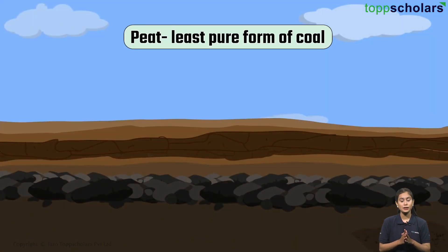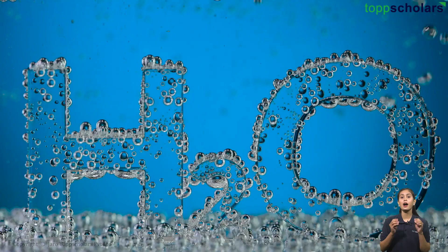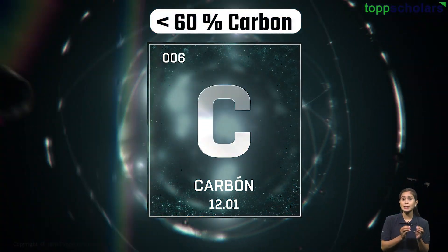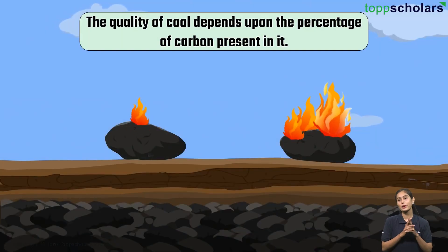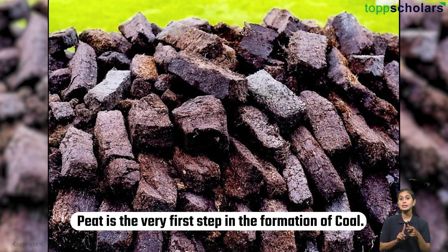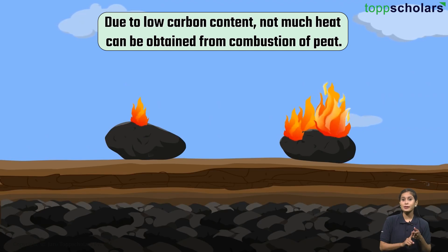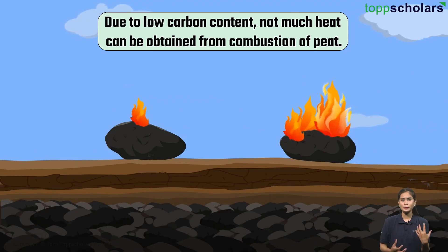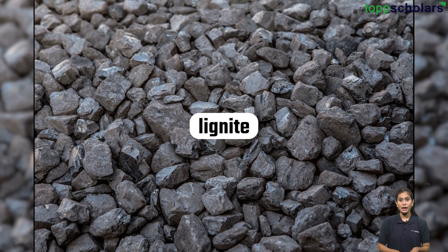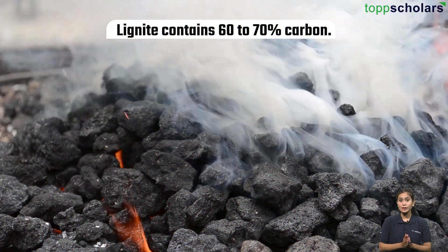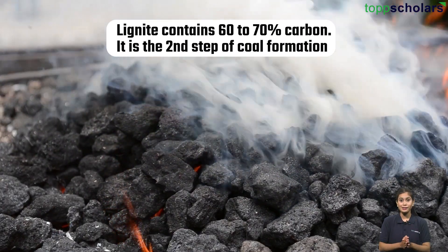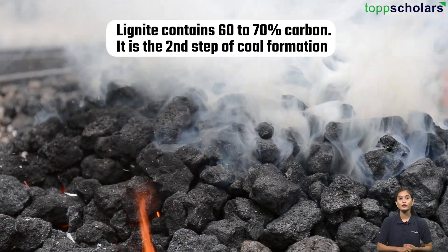Peat is the least pure form of coal, containing a high proportion of water and less than 60% carbon. The quality of coal is determined by the percentage of carbon present in it. Peat is the very first step in the formation of coal. Since very little carbon is present in peat, not much heat can be obtained from its combustion. Lignite is the second type. Peat transforms into lignite when there is an increase in pressure and temperature inside the earth's crust. This type of coal contains 60-70% carbon and is the second step of coal formation.